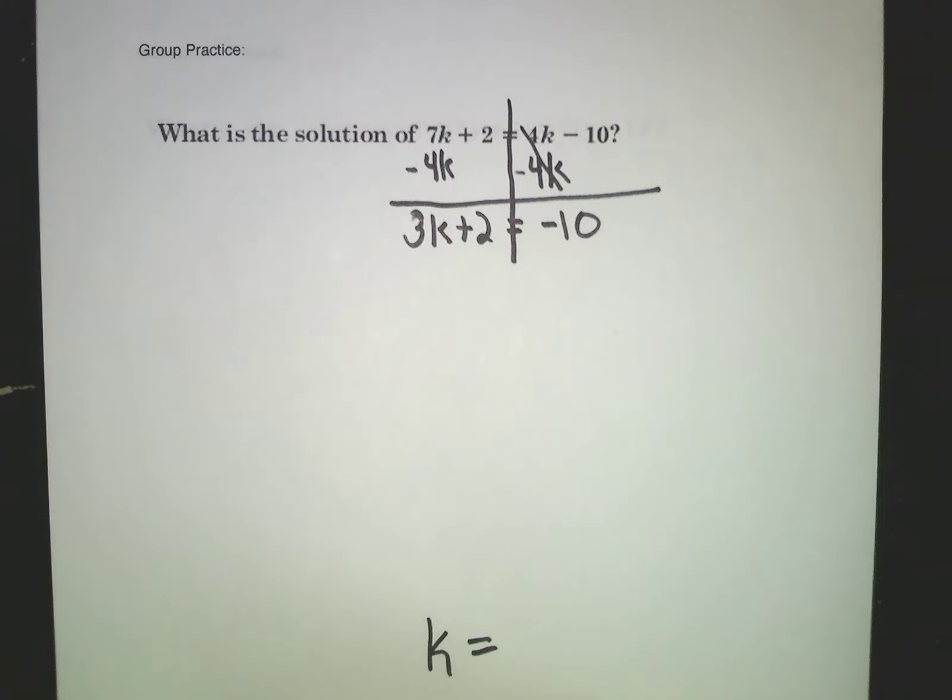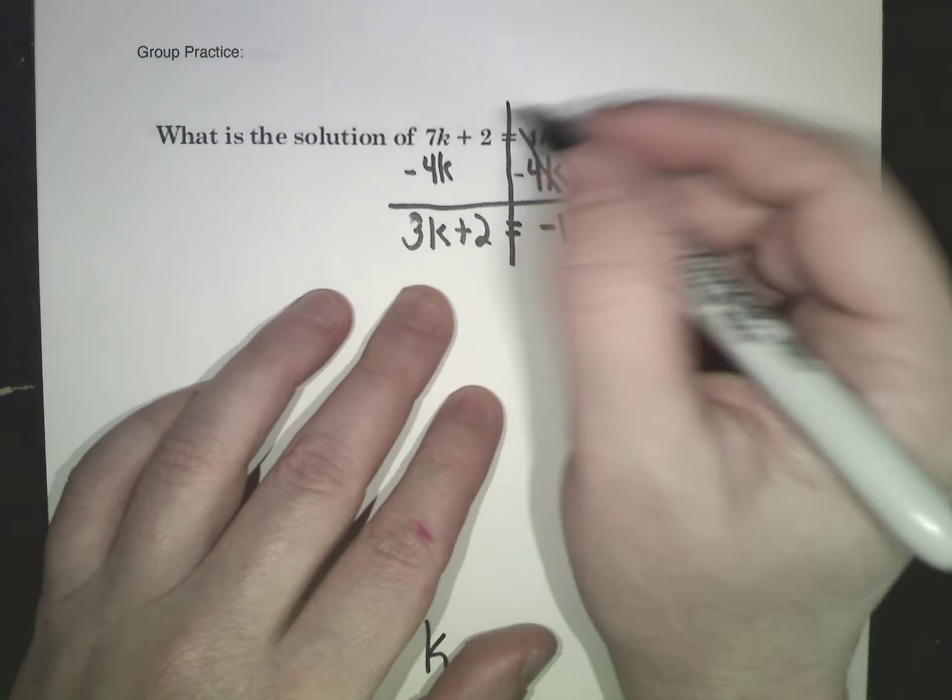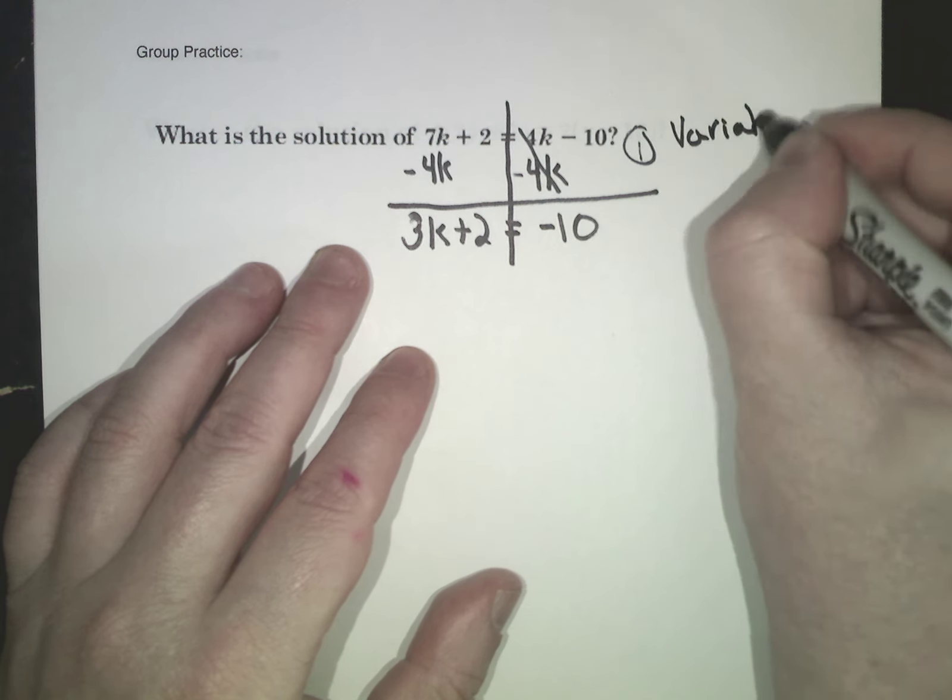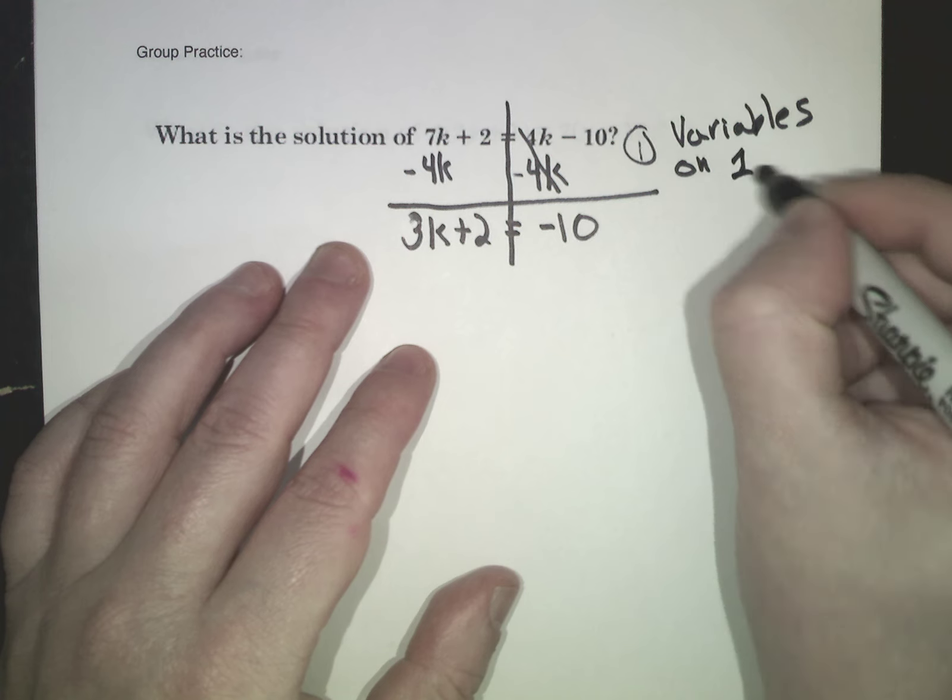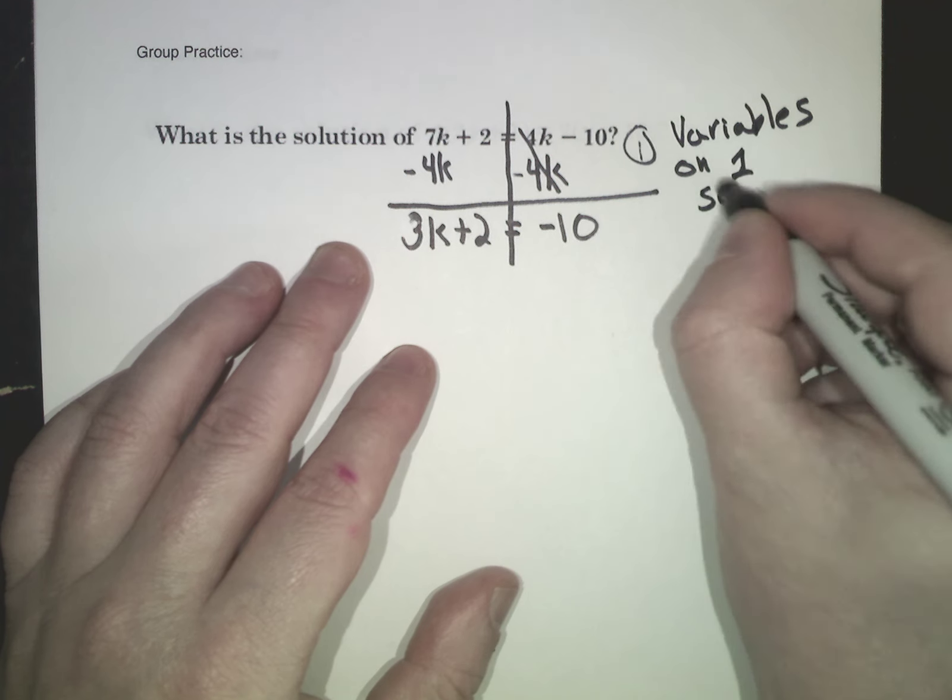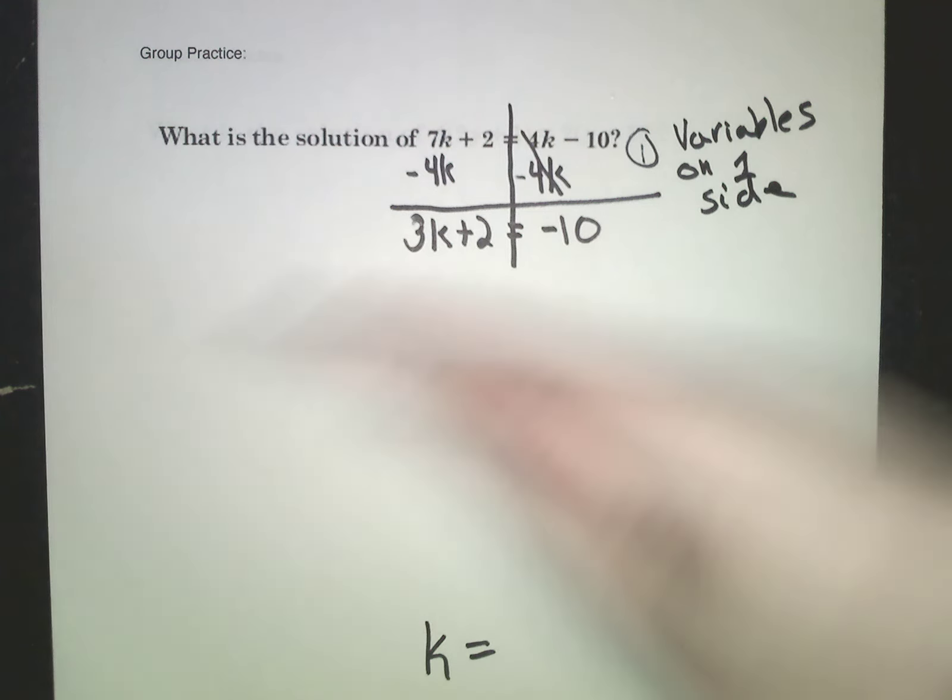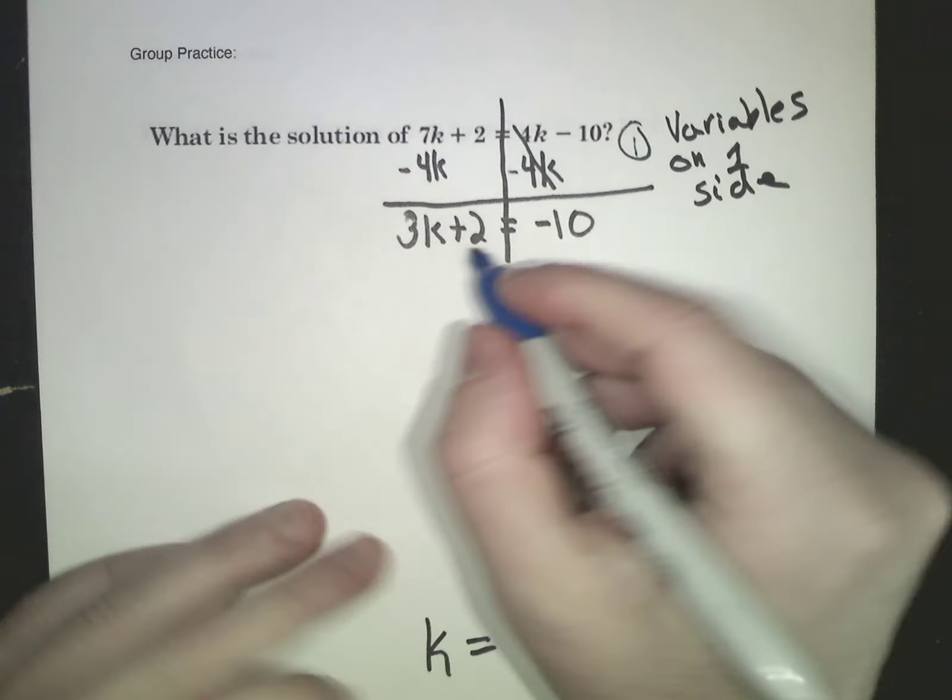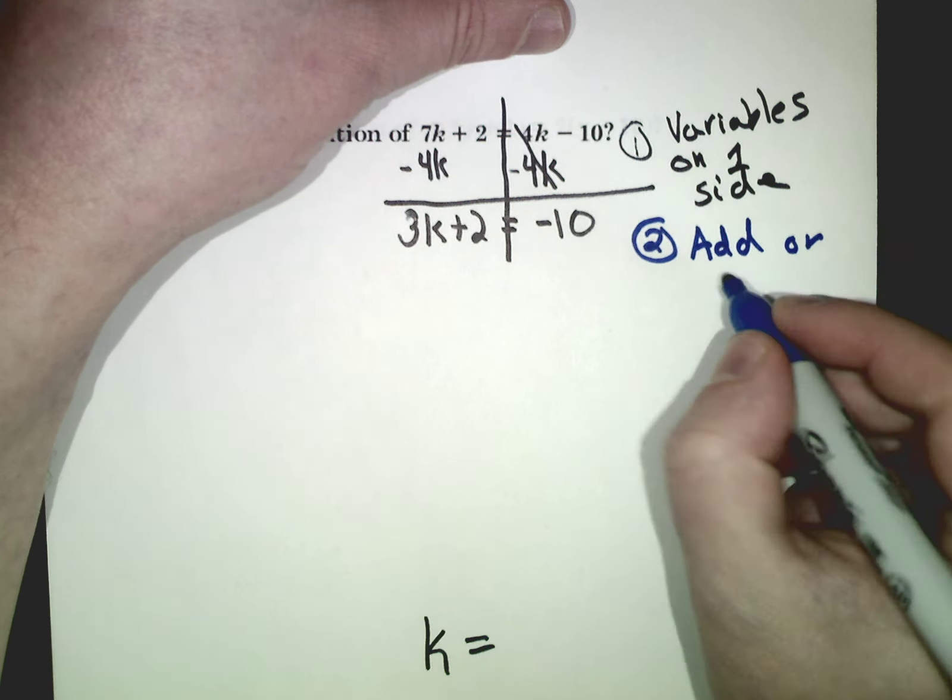Now we're back down to a two-step equation. So step 1 was to get variables on one side. You don't want variables on both sides. You want variables on one side. So step 2, let's change colors for step 2. Step 2 was addition or subtraction.